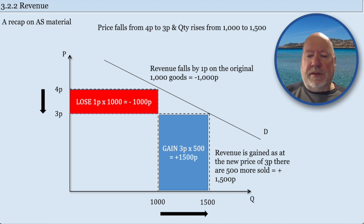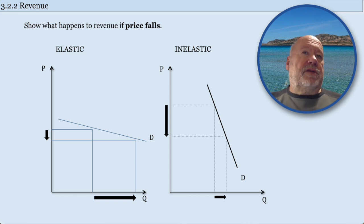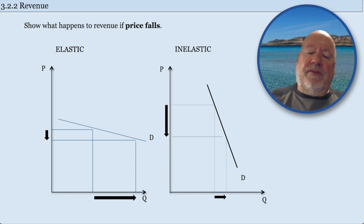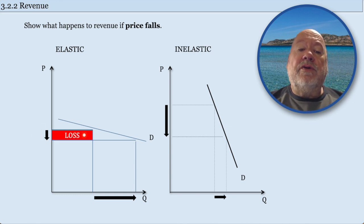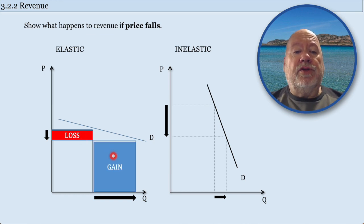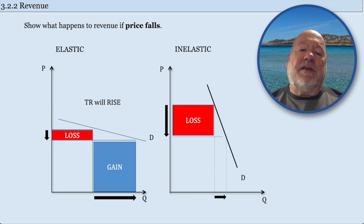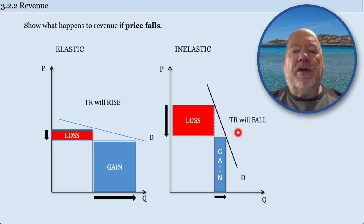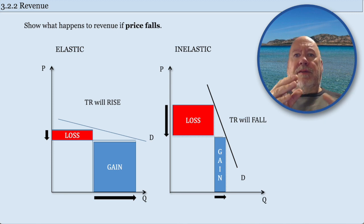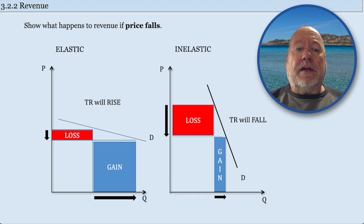Can we do this by just looking at elastic and inelastic demand curves? Yes. With elastic demand, when we drop the price, the loss box is small but the gain is huge — so reducing price and increasing quantity when demand is elastic means total revenue goes up. Whereas with inelastic demand, you drop the price, make this large loss box, and only get a small gain, so total revenue will fall. The relationship is simply: when you drop the price with elastic demand, total revenue rises; with inelastic demand, total revenue falls.